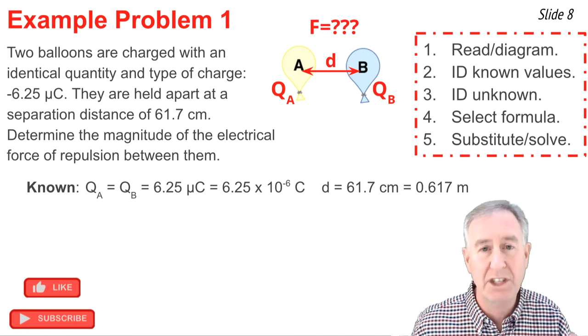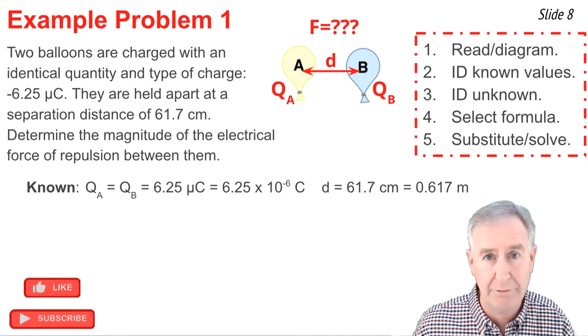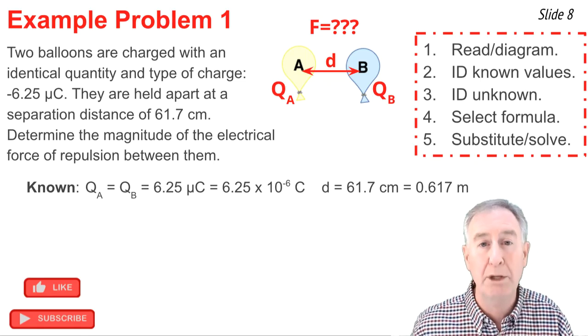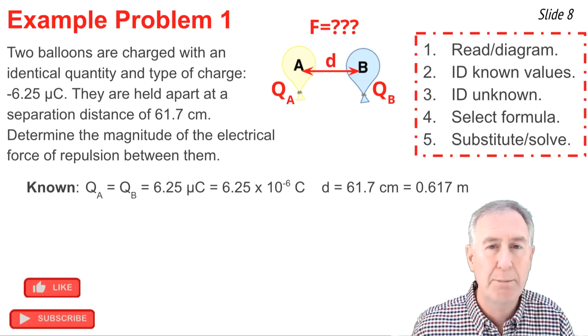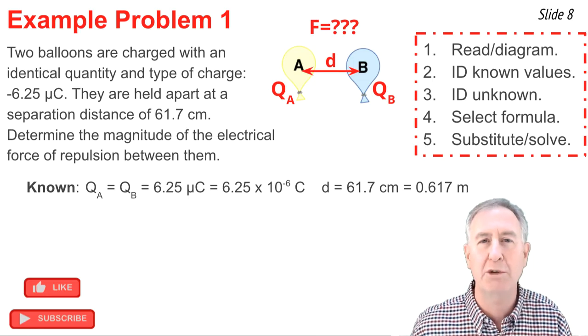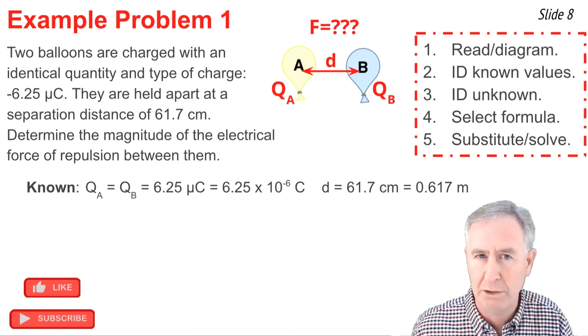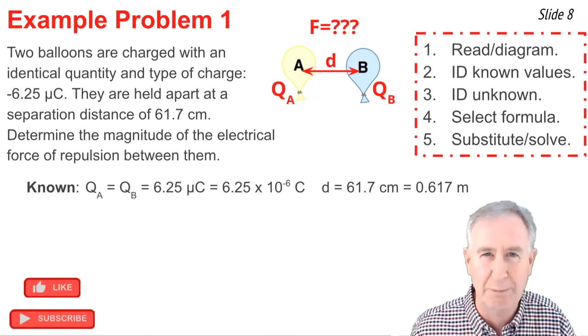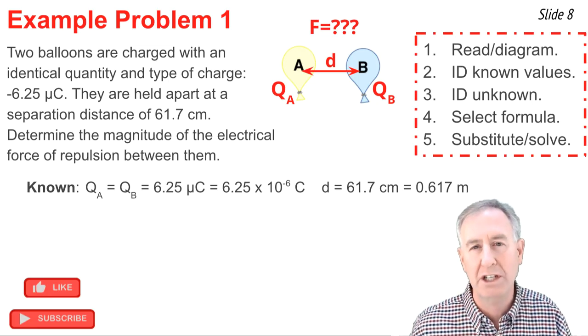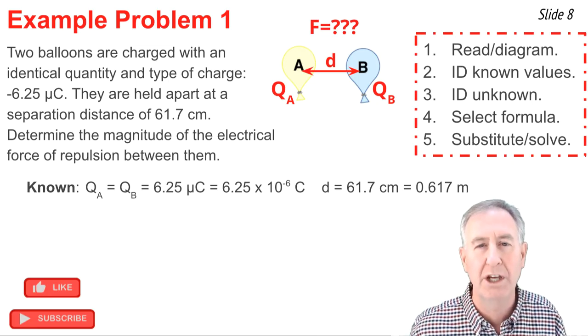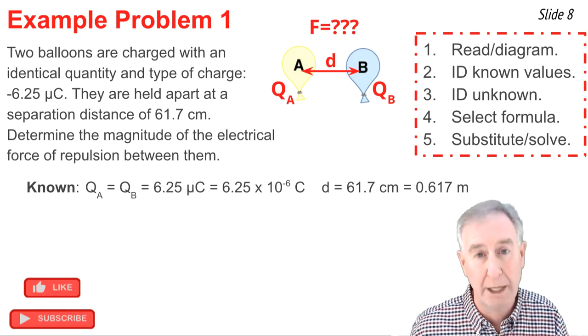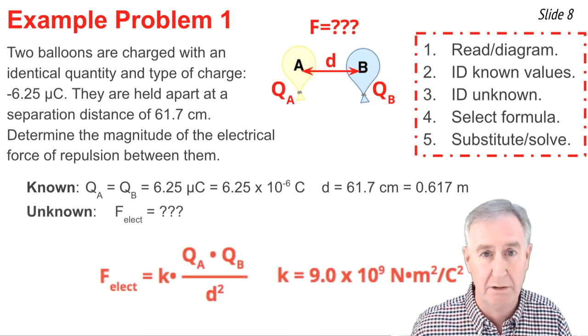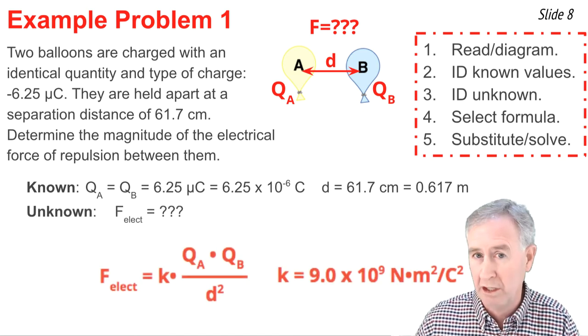I'm going to record what I know in this problem. I know QA is the same as QB. It states an identical amount of charge. And I know the value is negative 6.25 micro Coulombs. But you'll note I've left out the negative because it only is going to complicate matters. I'm not interested in anything other than the magnitude of this force. And having the sign of the charge isn't going to help me to do that. I also know that D is equal to 61.7 centimeters. You'll note that I've done conversions from Coulombs to micro Coulombs and from centimeters to meters. I'm looking for the F electrical. And here's my equation. I'm ready to go.